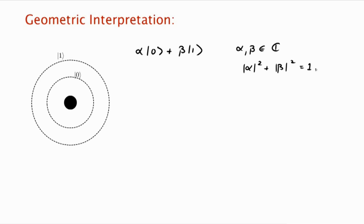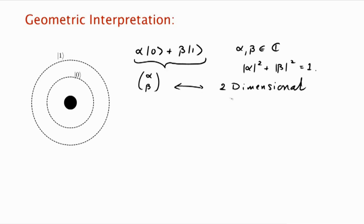To specify the state, we need two complex numbers. Another way to write down that state is by stacking the two numbers one on top of the other — alpha, beta — as a column vector. This is very suggestive because it says the state is a vector in a two-dimensional complex vector space. The entries are allowed to be complex, and the vector is normalized: |alpha|² + |beta|² equals the square of the length of the vector, so it's a unit vector.